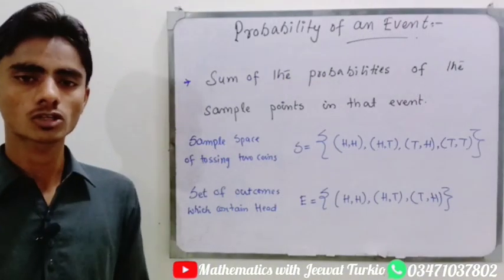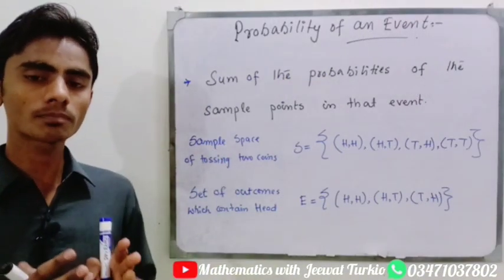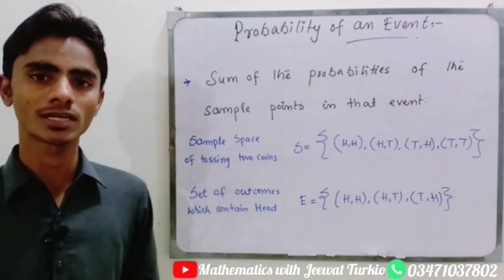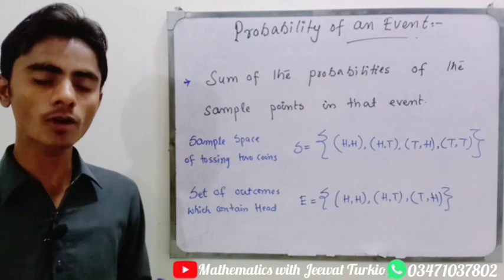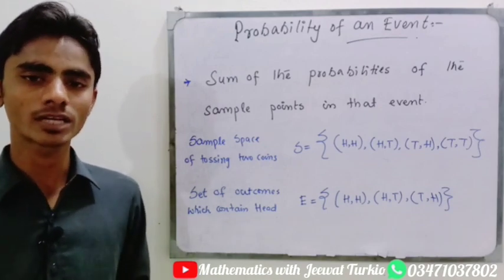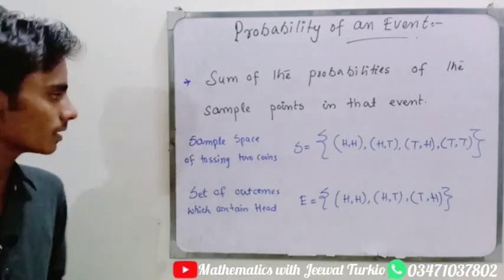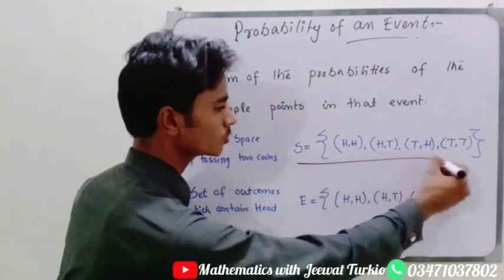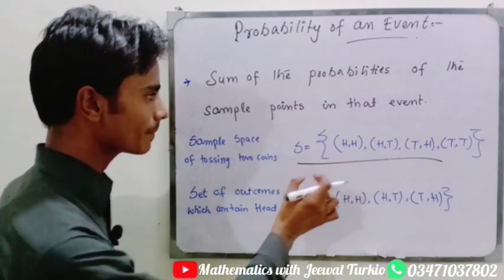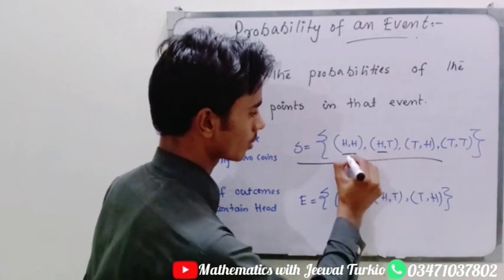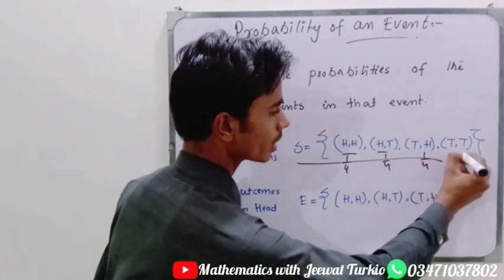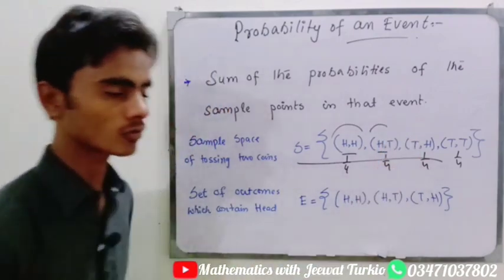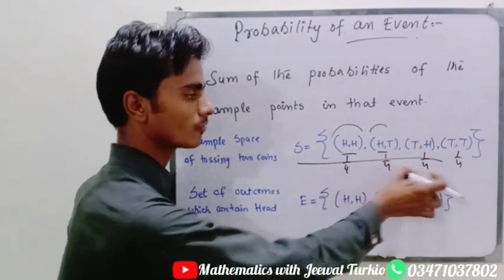Now we will see the probability of an event, which is the sum of the probabilities of all the sample points in the event. The sample space of tossing two coins is {HH, HT, TH, TT}, and the probability of each sample point is one by four, because these outcomes are equally likely and there are four of them, so each is assigned a probability of 1/4.